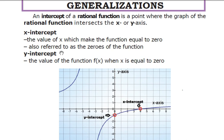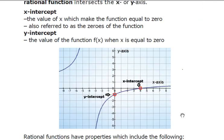The x-intercept is also referred to as the zeros or the root of the function. The zeros, the root, or the x-intercepts are used interchangeably. For the y-intercept, it is the value of the function f(x) when x is equal to 0. The y-intercept indicates that the graph of the function crosses or touches the y-axis.